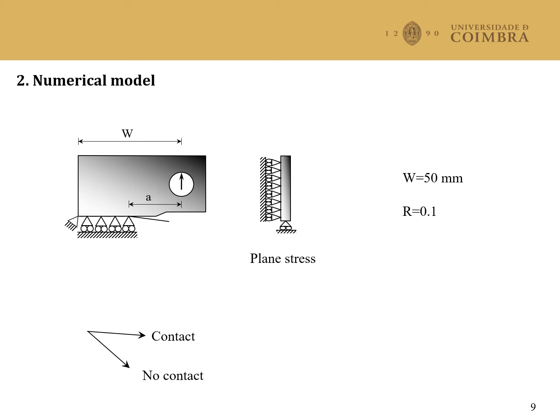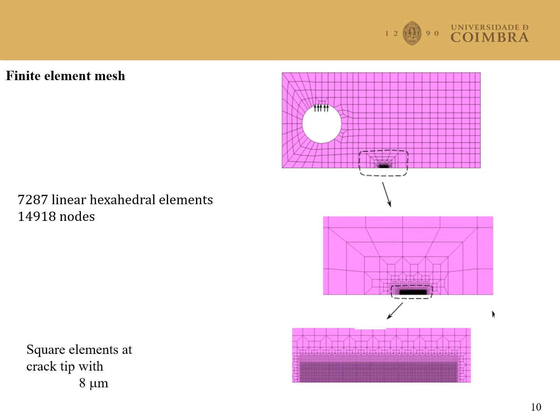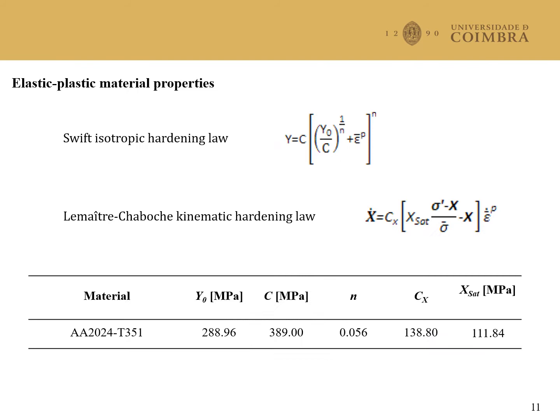This slide presents the finite element mesh. In the crack propagation region, the element has a size of 8 microns. The accurate simulation of crack tip plastic deformation is fundamental for the accuracy of numerical predictions. The material studied, which is the 2024-T351 aluminum alloy, was simulated considering the Swift isotropic hardening law and the Lemaitre-Chaboche kinematic hardening law. The material parameters are presented in this table.